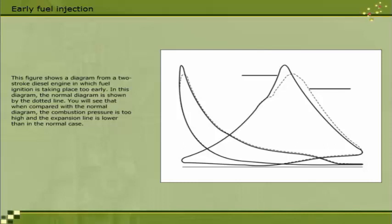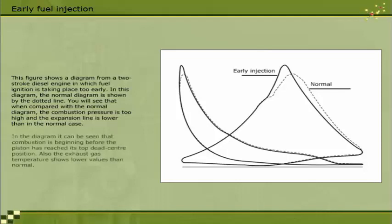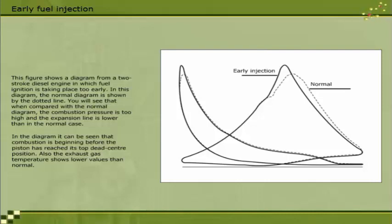When compared with the normal diagram, the combustion pressure is too high and the expansion line is lower than in the normal case. It can be seen that combustion is beginning before the piston has reached its top dead centre position. Also, the exhaust gas temperature shows lower values than normal.